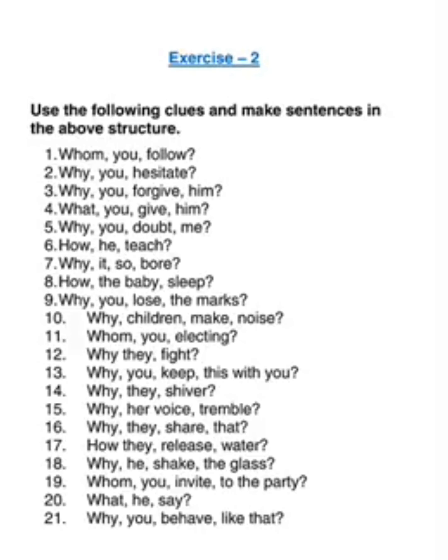What are you waiting for? What is happening here? Okay, so these structures have become completely clear. Now we are ready to do exercise 2. Use the following clues and make sentences in the above structure. The first one is 'whom you follow.' With you, you get the helping verb are. So: whom are you following?